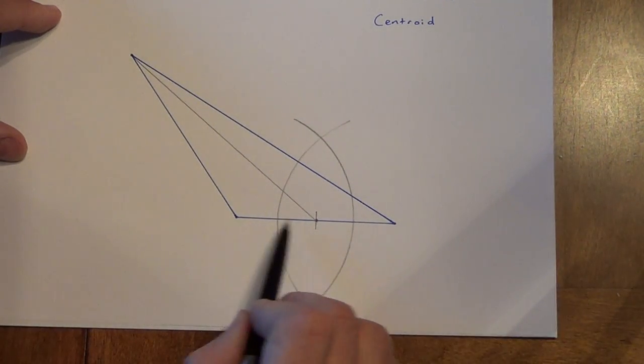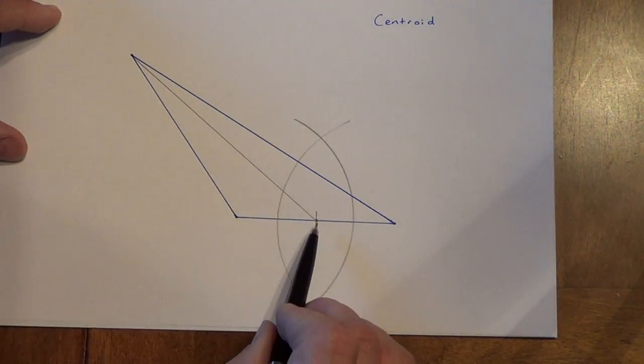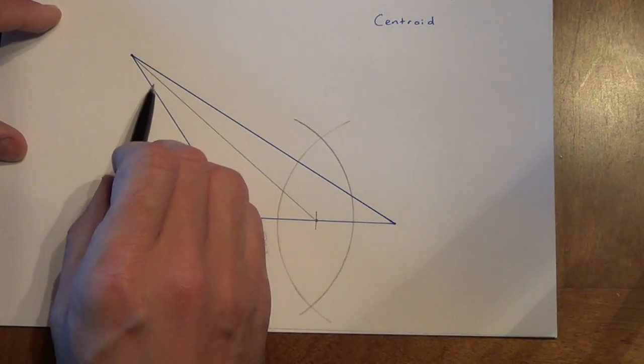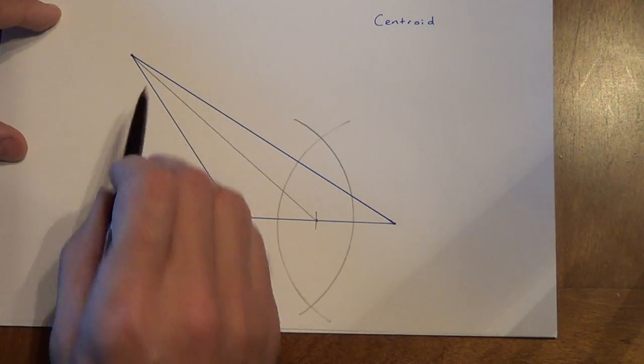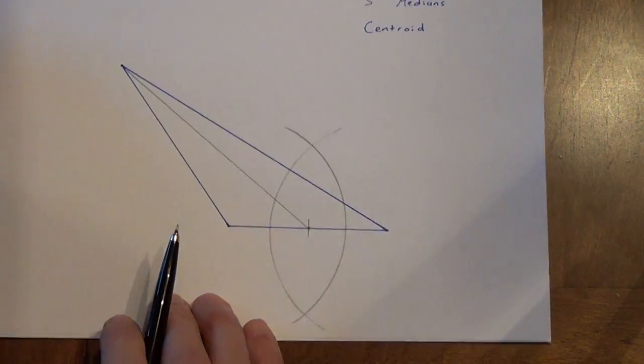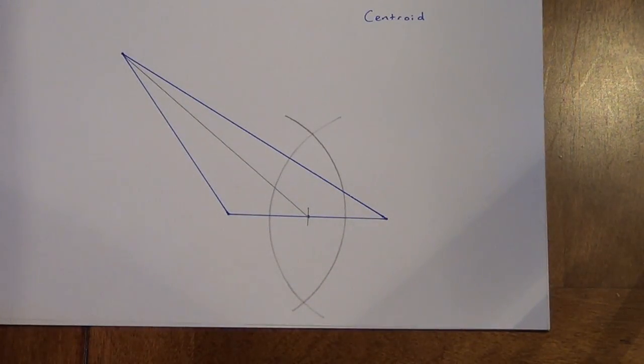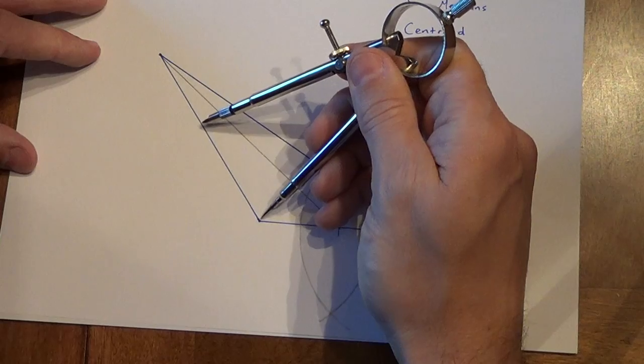It splits this side in half, but not perpendicularly, obviously. It may or may not cut this angle in half. It does not have to do that. A median is not necessarily an angle bisector. Now, let's go to a second side. I've got this side here.